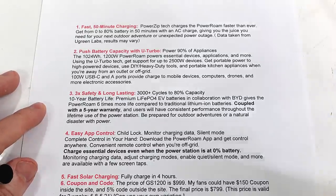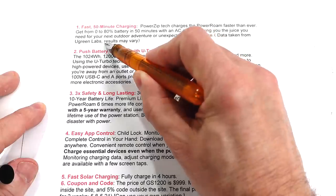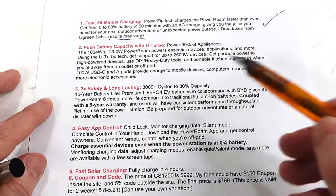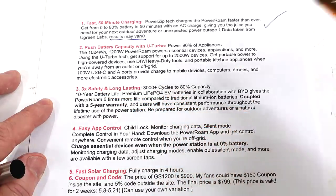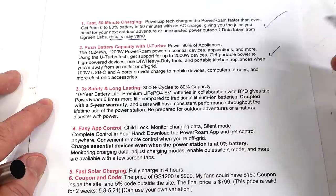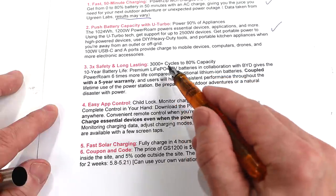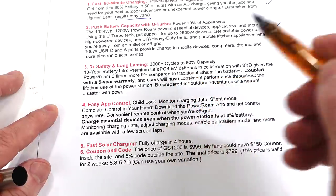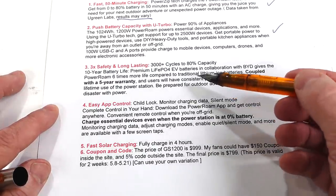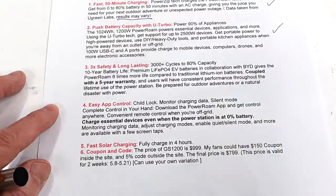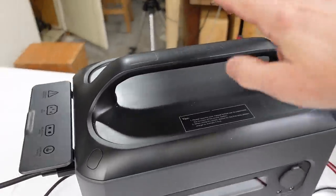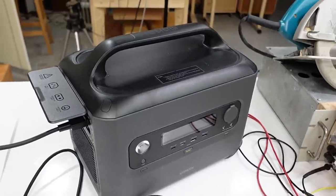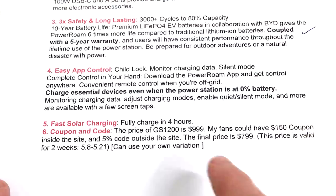What else is there to say about this power station? Well, these guys actually sent me a list of talking points. Fast 50 minute charging. Results may vary indeed. But covered. Push battery capacity with U-Turbo. I already covered that. 100 watts with USB-C and A ports. I haven't talked about that but yeah, it says that on the front too. 3 times safety and long lasting. Over 3000 cycles because it's a lithium iron phosphate battery. That's a newer technology that's a slightly lower power density than the older lithium ions. Those are not the sort of batteries that you've seen in videos of batteries blowing up. Much safer. And on that front this thing having a carrying handle gives me some peace of mind because if something bad were to happen I can always just grab it by the handle and get it out of there.